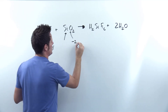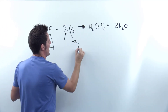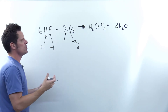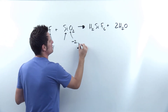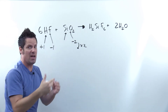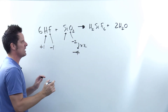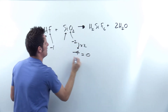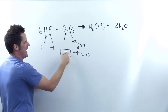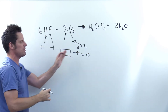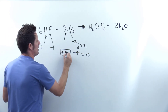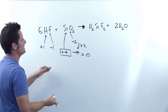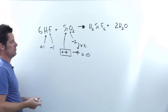Here we don't have any of those exceptions, so oxygen's oxidation number is -2. There are two oxygens, each with a -2 charge, giving a total charge of -4. The entire molecule has zero charge, so silicon's charge must be something that when added to -4 equals zero. That's +4, and since there's only one silicon atom, its oxidation number is +4.